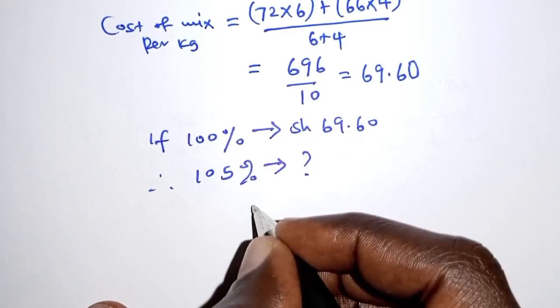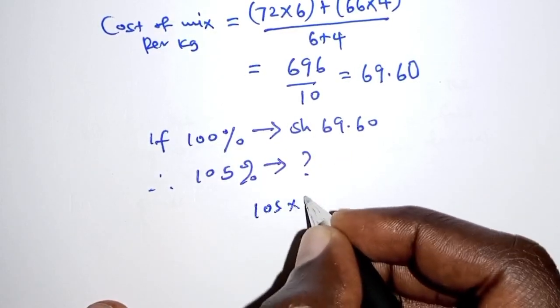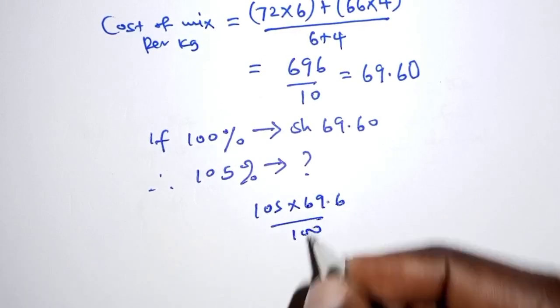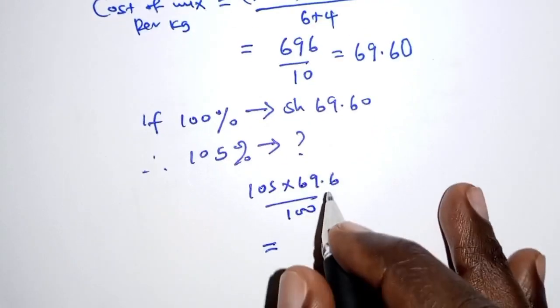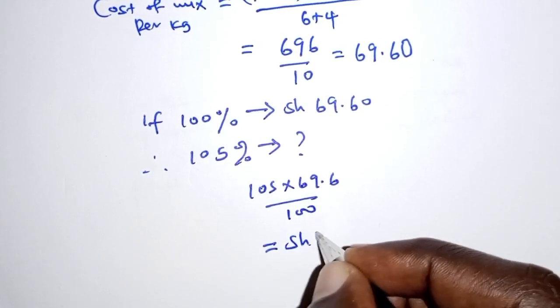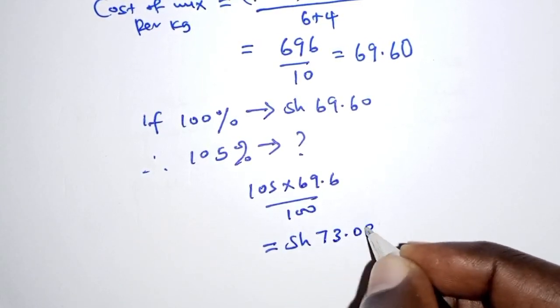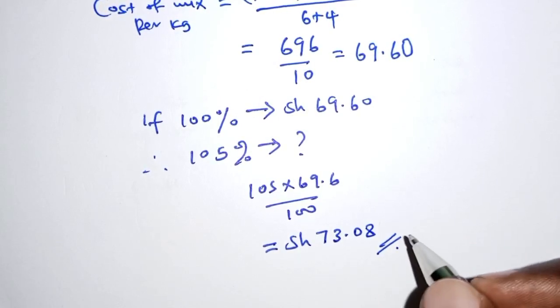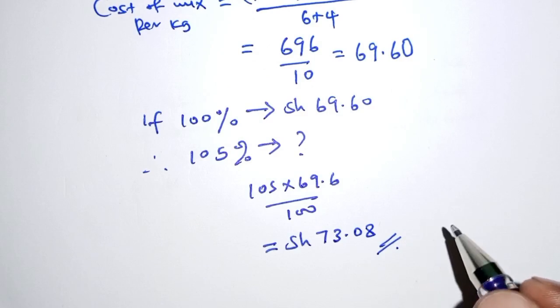Here when you cross multiply, we'll have 105 times 69.6 all over 100, and that becomes 73 shillings and 8 cents. The question requires us to give our answer correct to the nearest cents.